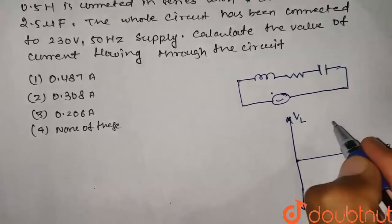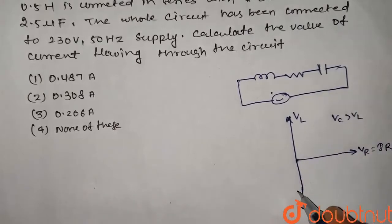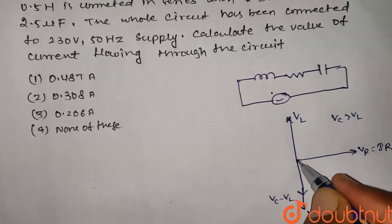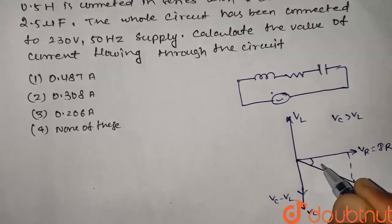Here we have VC is greater than VL, so this is VC minus VL. If we take the resultant, this is V, and this is the angle phi.